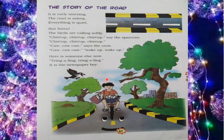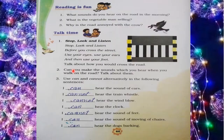You can also listen to the newspaper twinkling, and also listen to the vegetable man's voice. You can also see the children going to school. So here you have understood the story. Now come to the book exercise of this chapter.